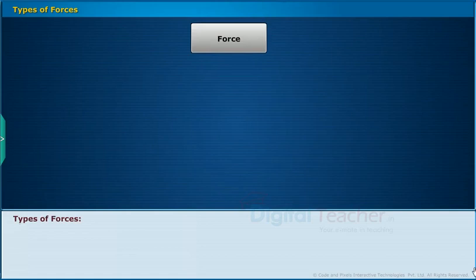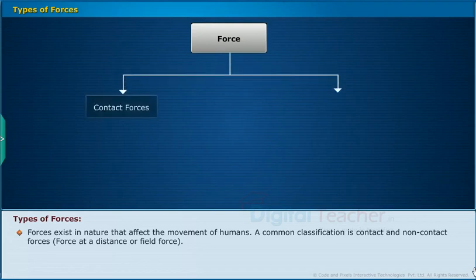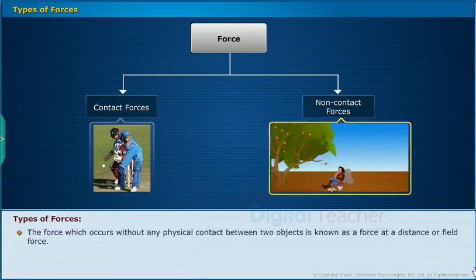Forces exist in nature that affect the movement of humans and objects. A common classification is contact and non-contact forces. Force on account of direct physical contact between two interacting objects is known as contact force. The force which occurs without any physical contact between two objects is known as a force at a distance or field force.